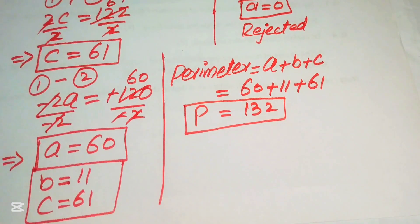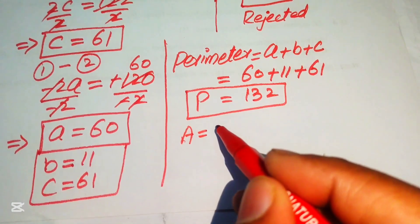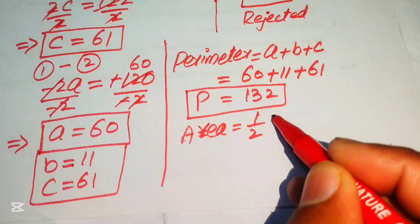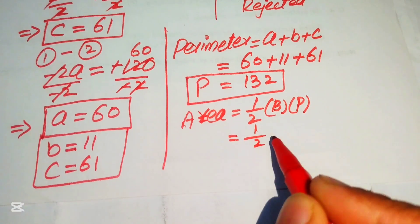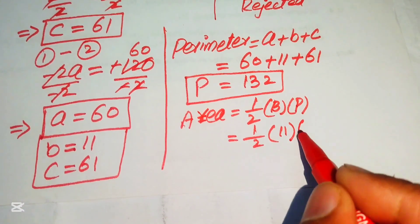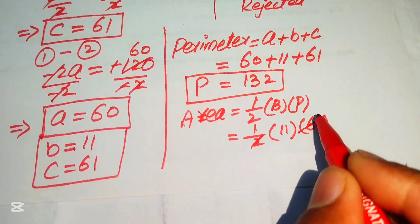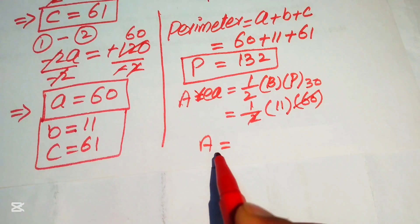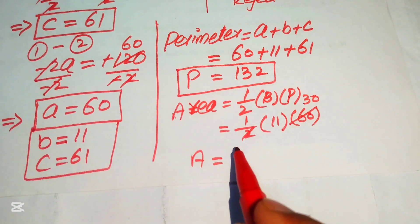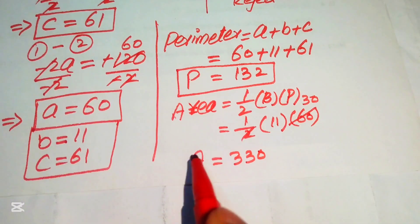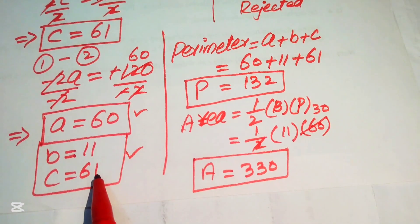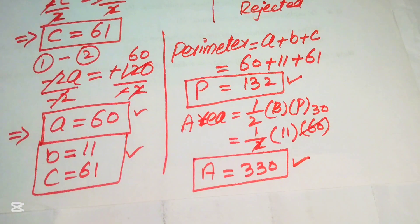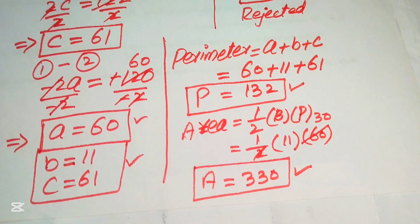The area of a triangle equals half times base times height (perpendicular). Here the base is 11 and the perpendicular is 60, so area = ½ × 11 × 60 = 11 × 30 = 330. Therefore the area of the given triangle is 330. These are all the required results: side lengths a = 60, b = 11, c = 61; perimeter = 132; area = 330. Thank you for watching — please subscribe to my channel for more videos.